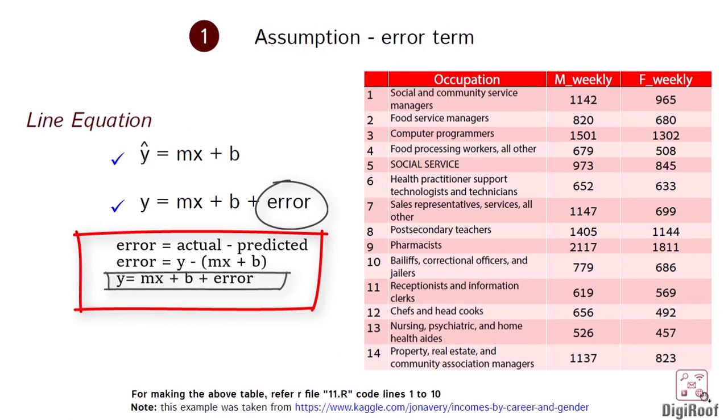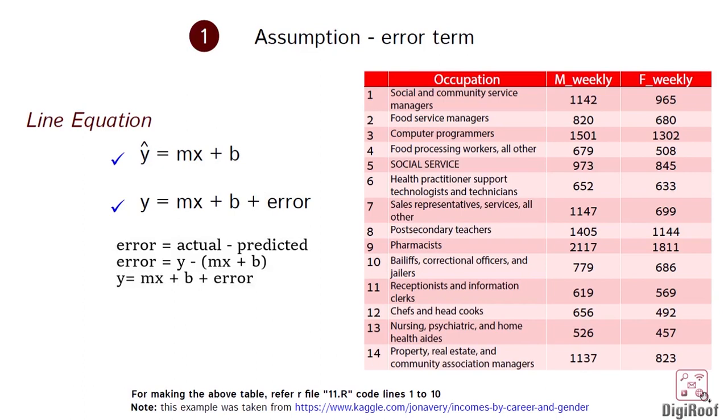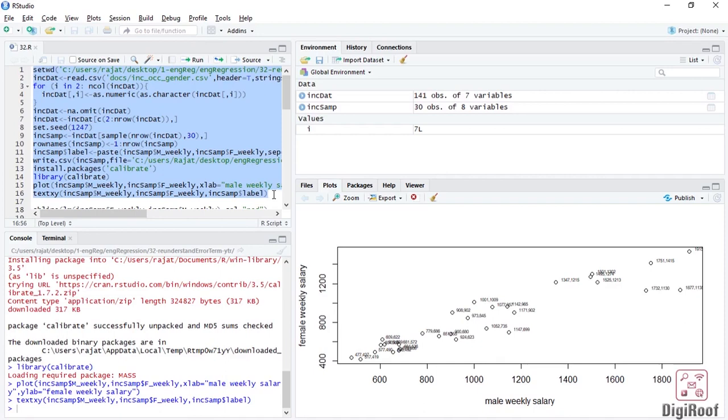We are going to again talk about the error term with the help of an example. We are going to continue with the income data that we have been working on from the past videos where we have assumed male weekly salary to be a predictor and female weekly salary to be the response.